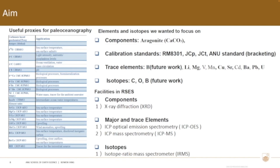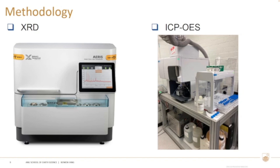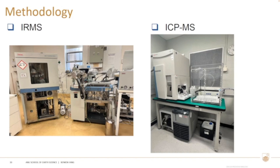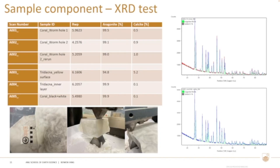These trace elements and isotopes have been used in many areas: reconstructing sea surface temperature and salinity, and studying biological processes such as coral bleaching events. The facilities used at RSS are mainly XRD, ICP-OES, ICP-MS, and IRMS. The XRD is used for composition testing — to check whether the powder is pure aragonite or pure calcite. ICP-OES is mainly used for element ratio studies, IRMS for carbon and oxygen isotope measurements, and ICP-MS for trace elements with very low concentration.